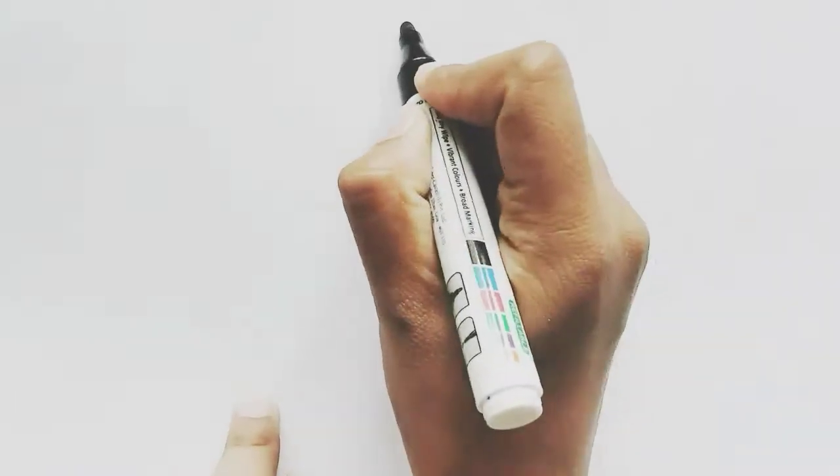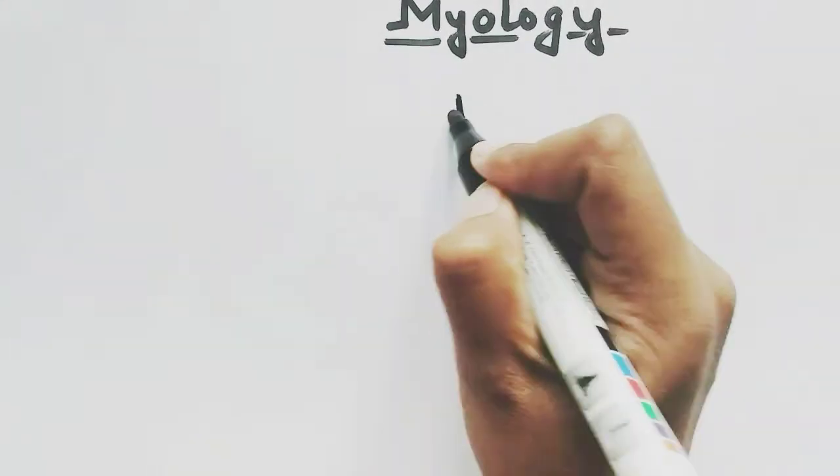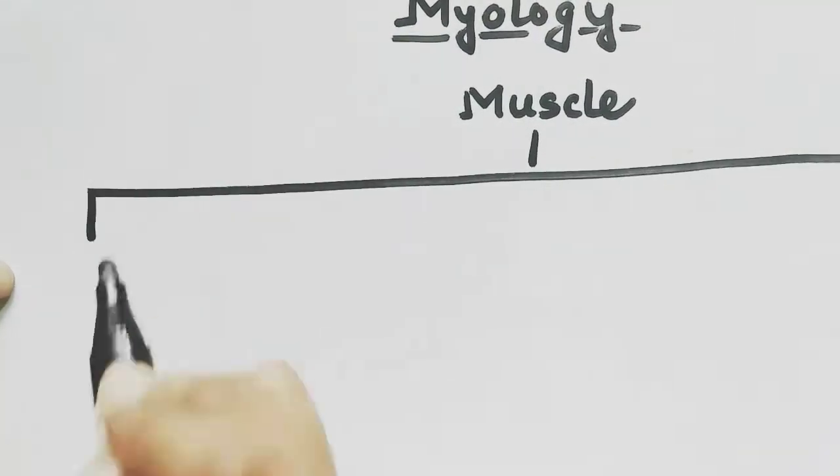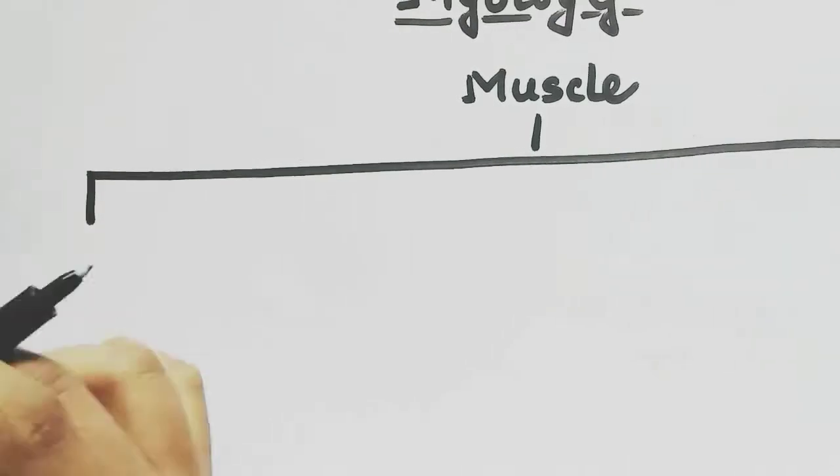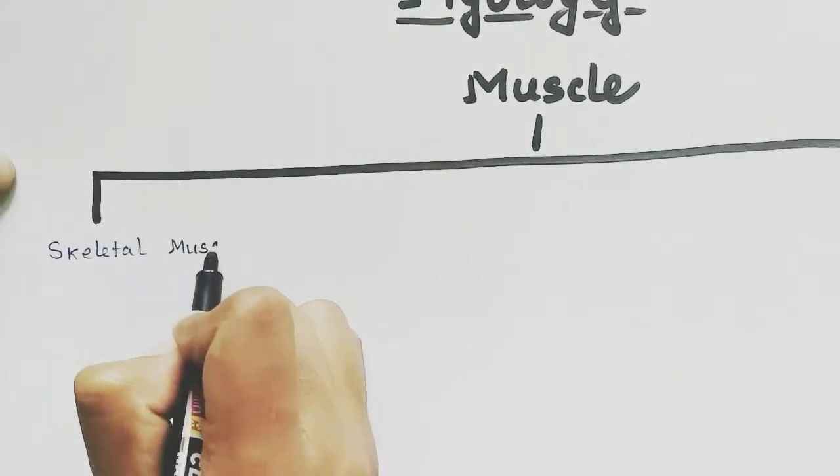Today we will do an introduction on myology. There are mainly three types of muscles. The first type is skeletal muscle, that is the muscle on the skeleton or the bone.